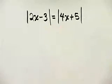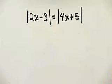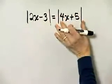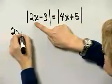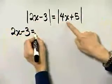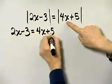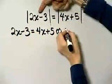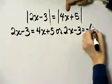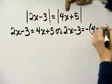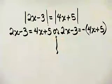Notice we're solving this absolute value equation. We have both absolute values isolated. For this absolute value to equal the other, either the expression inside — 2x minus 3 — must equal the expression within the other absolute value bars, 4x plus 5, or 2x minus 3 must equal the opposite of the other expression. So we need to solve these two linear equations.